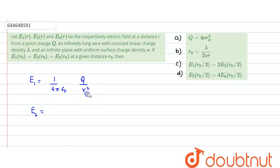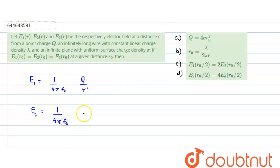E2 at any radial distance r is due to an infinitely long wire, so it is written as (1/4πε) times 2λ divided by r.